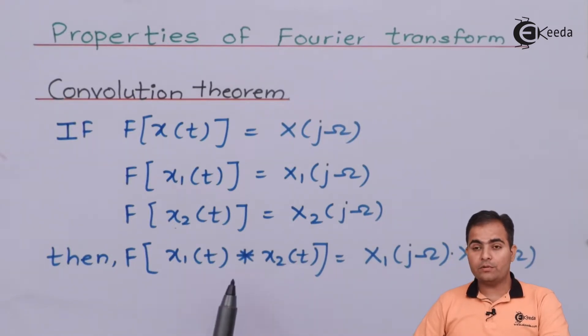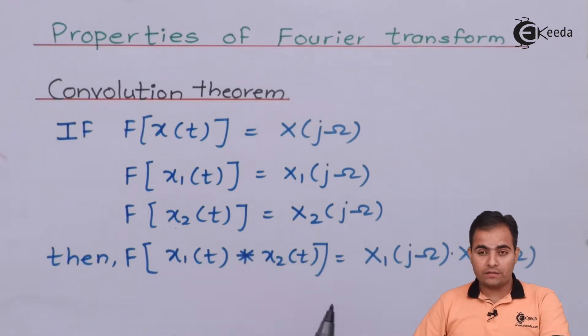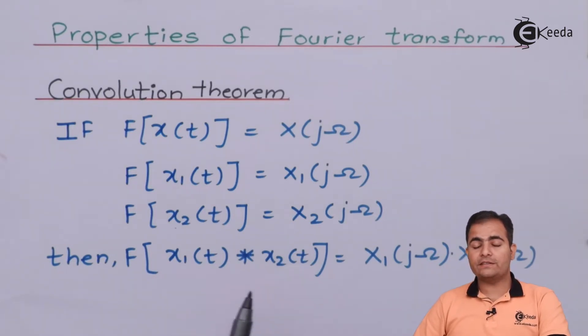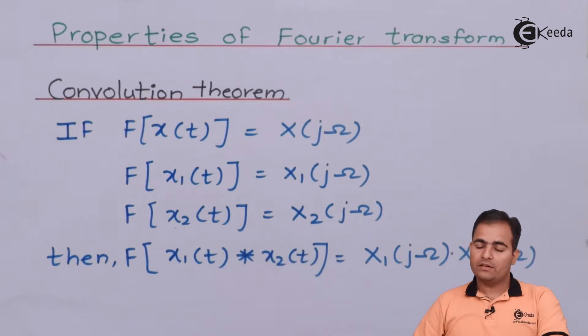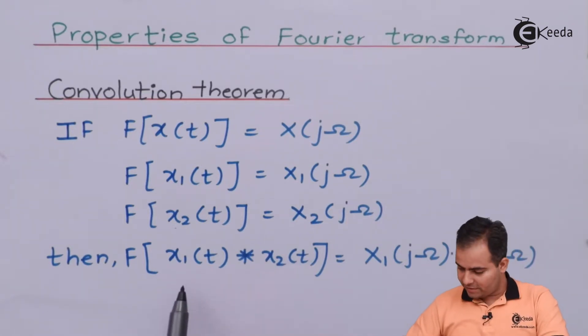That is, if we want to convert a convolution of two functions into the Fourier domain, it is always a product of the Fourier transforms of both functions separately. We will now prove this statement.